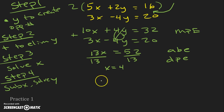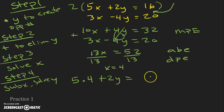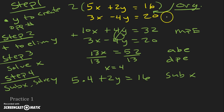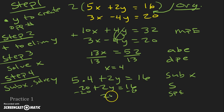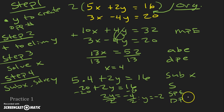So we've got 5 times 4 plus 2y equals 16. Use the original equation when you can in these problems. Simplifying, we get 20 plus 2y equals 16. We subtract 20 from both sides and we're left with 2y equals negative 4. Dividing, we get y equals negative 2. So our answer is written as a coordinate point where x is 4 and y is negative 2: the answer is (4, −2).